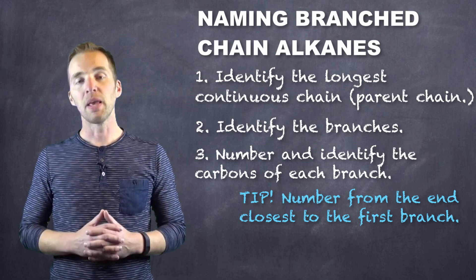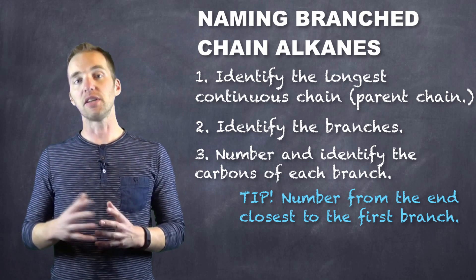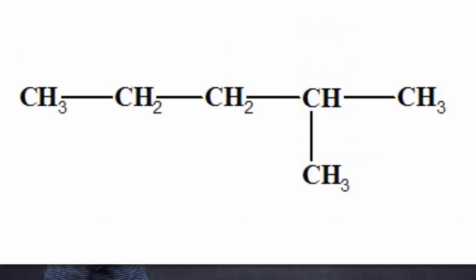So for example, if we had a branch off of the second carbon in a pentane, we would start numbering from the end closest to that branch, not the end furthest from the branch. So it would be branching off of the second carbon rather than the fourth.